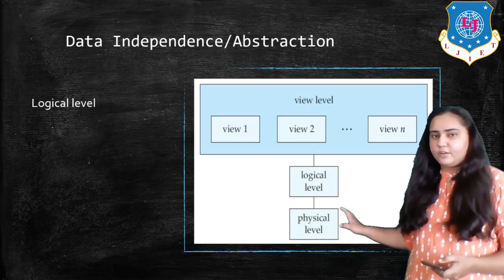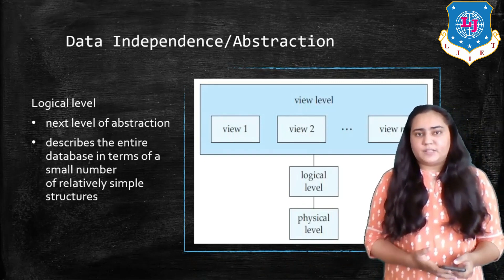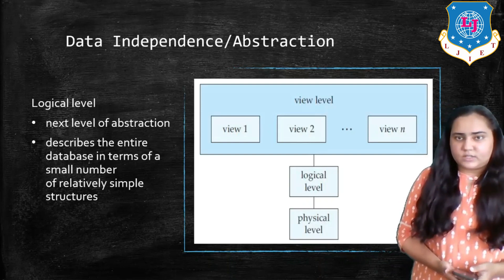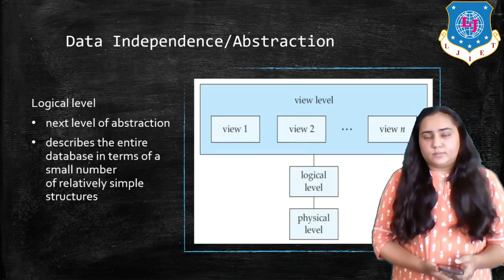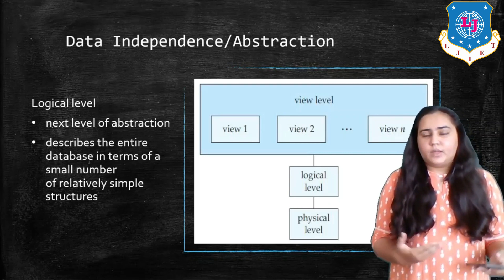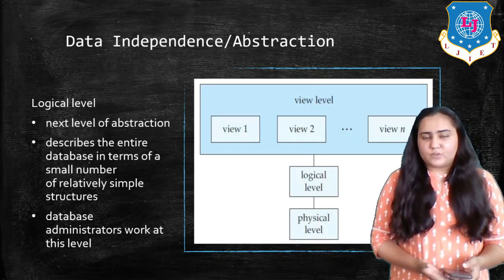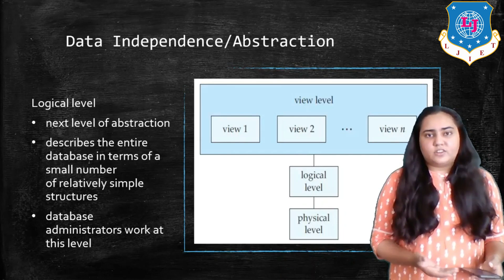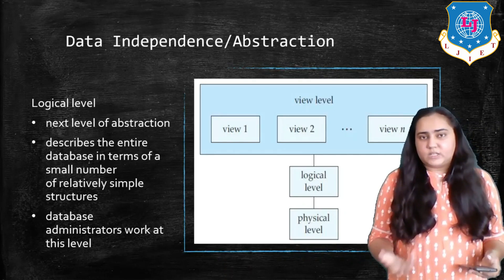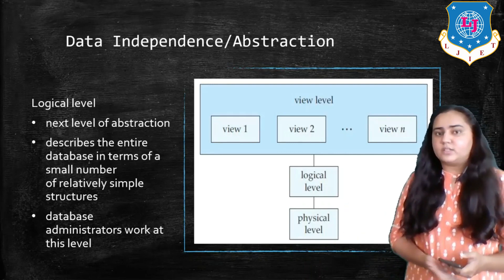The second level is the logical level — the next level of abstraction. This describes the entire database in terms of a small number of relatively simple data structures. While the physical level uses complex structures, the logical level uses simpler data structures like B-trees and indices, which are used to create an index for your database for faster data access. Data administrators work at this level — if you are creating the database, defining columns, their data types, and what type of data should be inside, you are a data administrator working at the logical level.